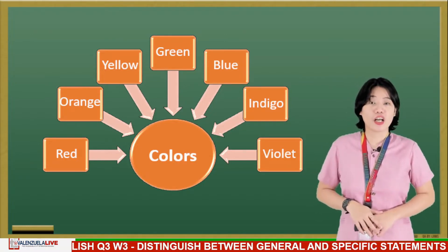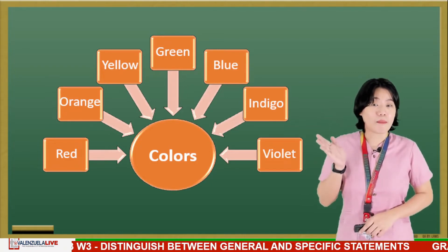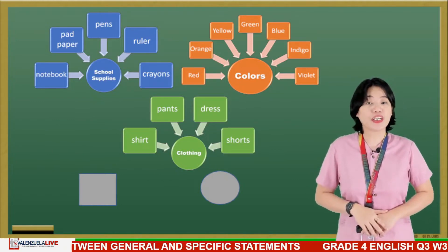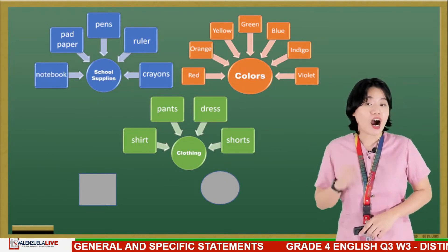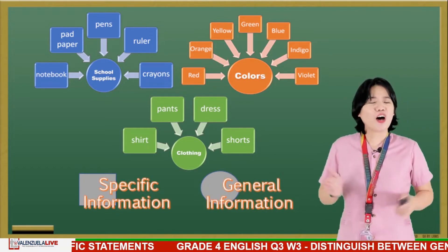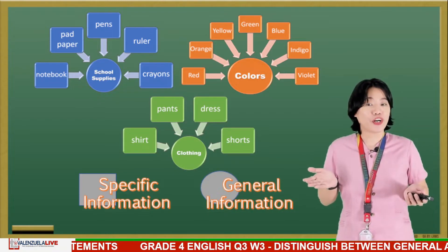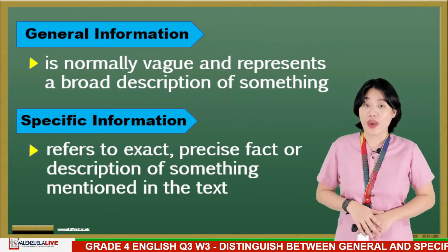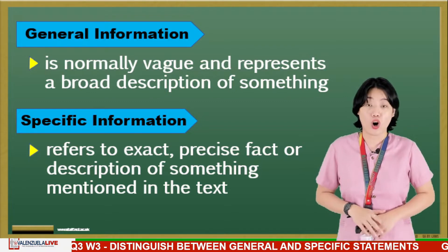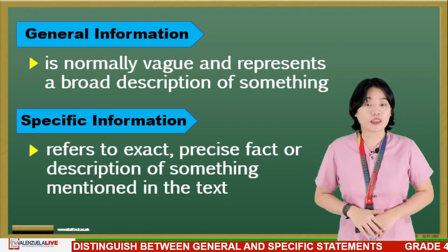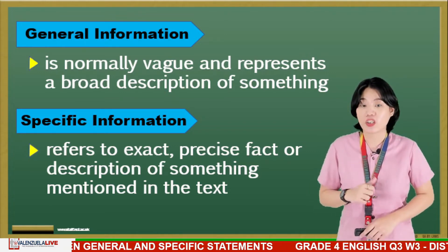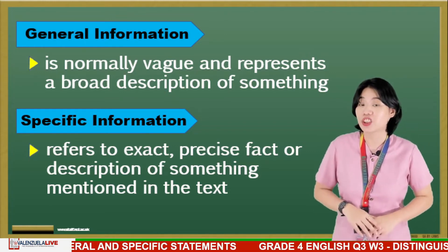Now look, the words written in the boxes are examples of specific information, while those words inside the circles are what we call general information. How do we know if a statement or word is general? It is normally vague and represents a broad description of something. On the other hand, we call it specific information or statement when it is an exact, precise fact or description of something mentioned in the text.